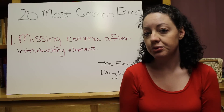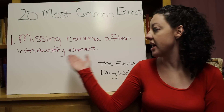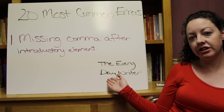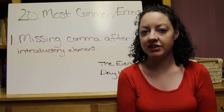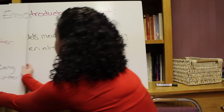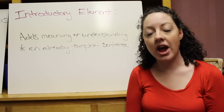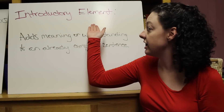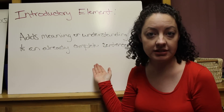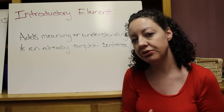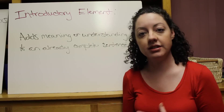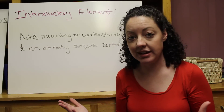So the number one rule is a missing comma after an introductory element. These rules were put together by the Everyday Writer, and I'll put a link to that on the Edmodo website. As a review, an introductory element adds meaning or understanding to an already complete sentence. That means it can be removed from the sentence and the sentence will still make sense, or you can move it from the beginning to the end of the sentence and it still makes sense.